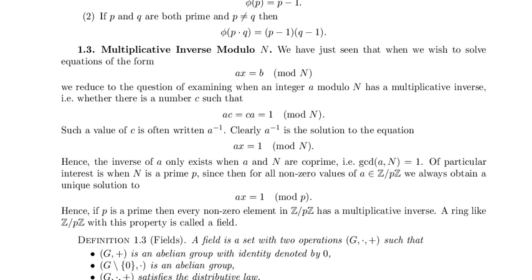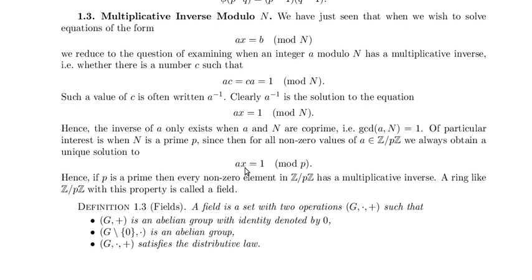Of particular interest is when n is a prime p, since then for all non-zero values of a in Z mod pZ, we always obtain a unique solution to ax equals 1 mod p — everything has a unique inverse. Hence if p is a prime, then every non-zero element in Z mod pZ has a multiplicative inverse.